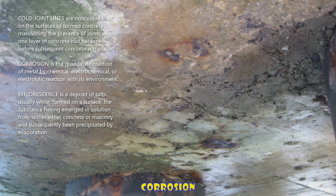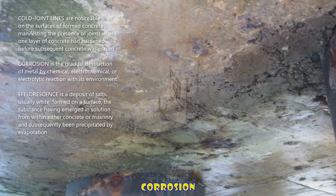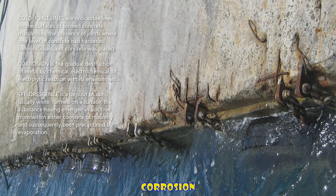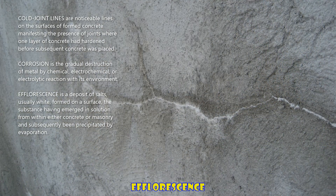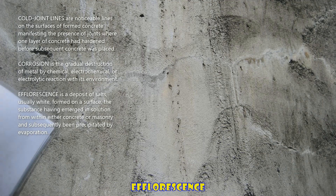Corrosion is the gradual destruction of metal by chemical, electrochemical, or electrolytic reaction with its environment. Efflorescence is a deposit of salts, usually white, formed on a surface, the substance having emerged in solution from within either concrete or masonry and subsequently been precipitated by evaporation.